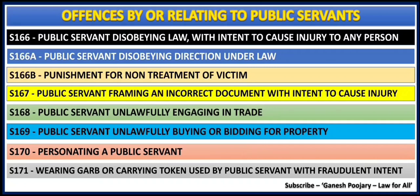Section 170 deals with personating a public servant — that is, acting like a public servant which one does not actually hold. For example, a general public person behaving like a railway officer, or a government hospital doctor who is a public servant but acting like a railway officer — that is also an offense. Section 171 goes further, dealing with wearing garb or carrying a token used by a public servant with fraudulent intent. I am covering these two sections together in a single session, video seven, my last video on this chapter.